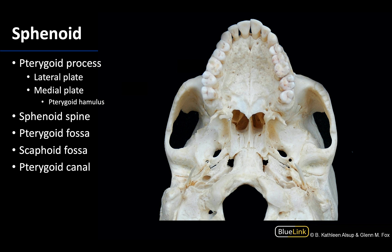There's a lot going on in this slide, so we're going to take our time to work through these structures. We are looking at an inferior view of the cranium, with the photo cut off some of the posterior portion so we can focus on this region. This whole region is going to be the pterygoid process, and it's going to include two plates of bone — the more lateral plate and the medial plate. On this medial plate there is a projection, and this is the pterygoid hamulus. A tendon of one of the palate muscles, the tensor veli palatine, will glide along this hamulus.